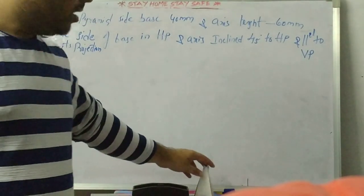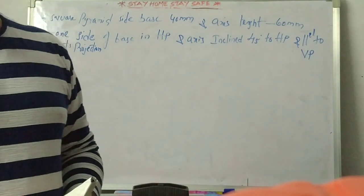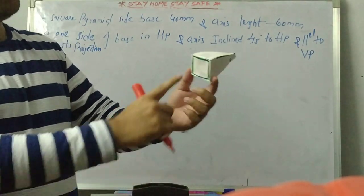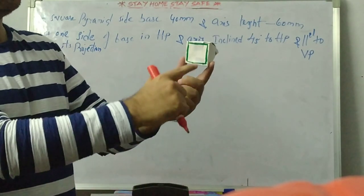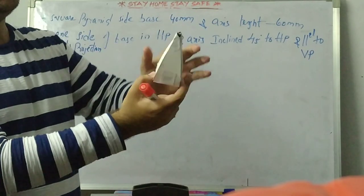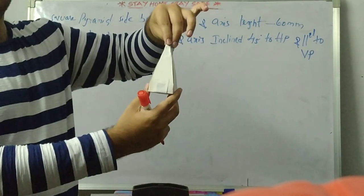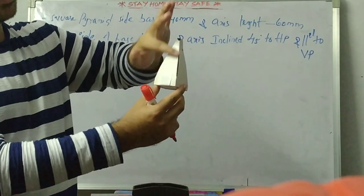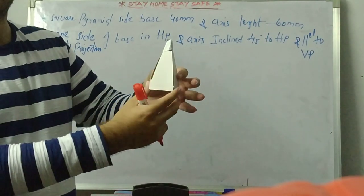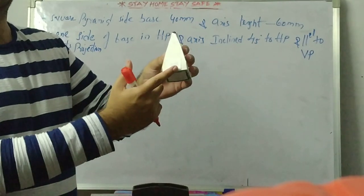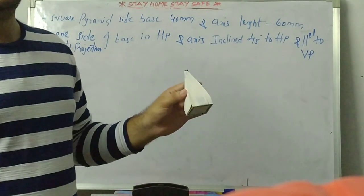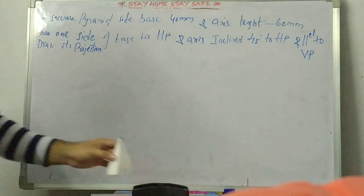Good morning friends. Today in this class we discuss a problem on a square pyramid. A square pyramid has one base of square shape, along with four triangular faces. At the top point we have the apex. These are the triangular faces, and these are called slant edges. We have four slant edges and four triangular faces, along with the square base.